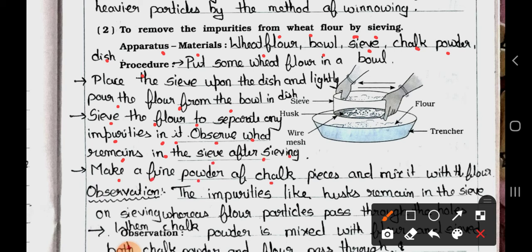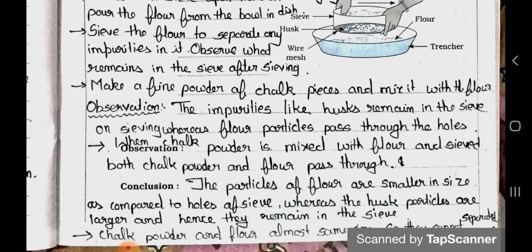Make a fine powder of chalk pieces and mix it with the flour. Observation: The impurities like bugs remain in the sieve on sieving whereas flour particles pass through the holes. When chalk powder is mixed with the flour and sieved, both chalk powder and flour pass through. Conclusion: The particles of flour are smaller in size as compared to holes of sieve whereas the bug particles are larger and hence they remain in the sieve. Chalk powder and flour powder are almost same.